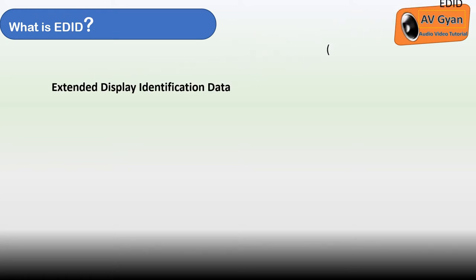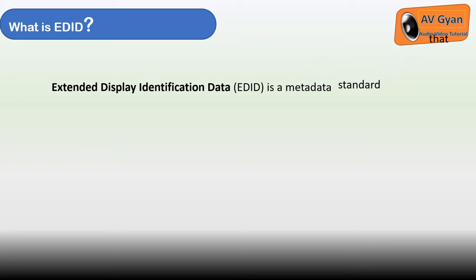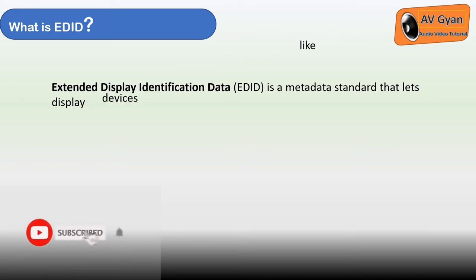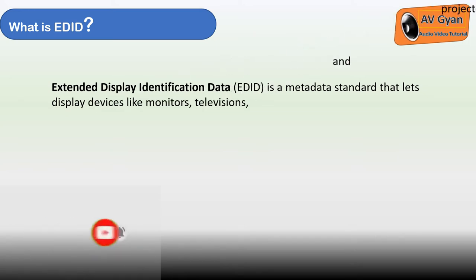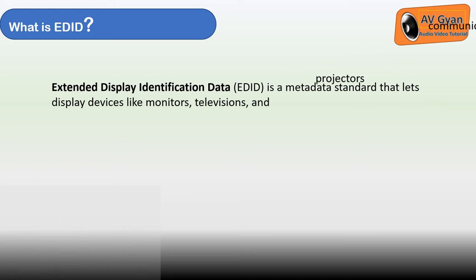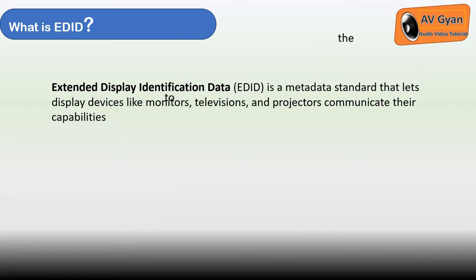Today we are going to learn about a simple but confusing term in the domain of the audio-visual community — it's EDID. The acronym represents Extended Display Identification Data. EDID is a metadata standard that lets display devices like monitors, televisions, and projectors communicate their capabilities to the video source.